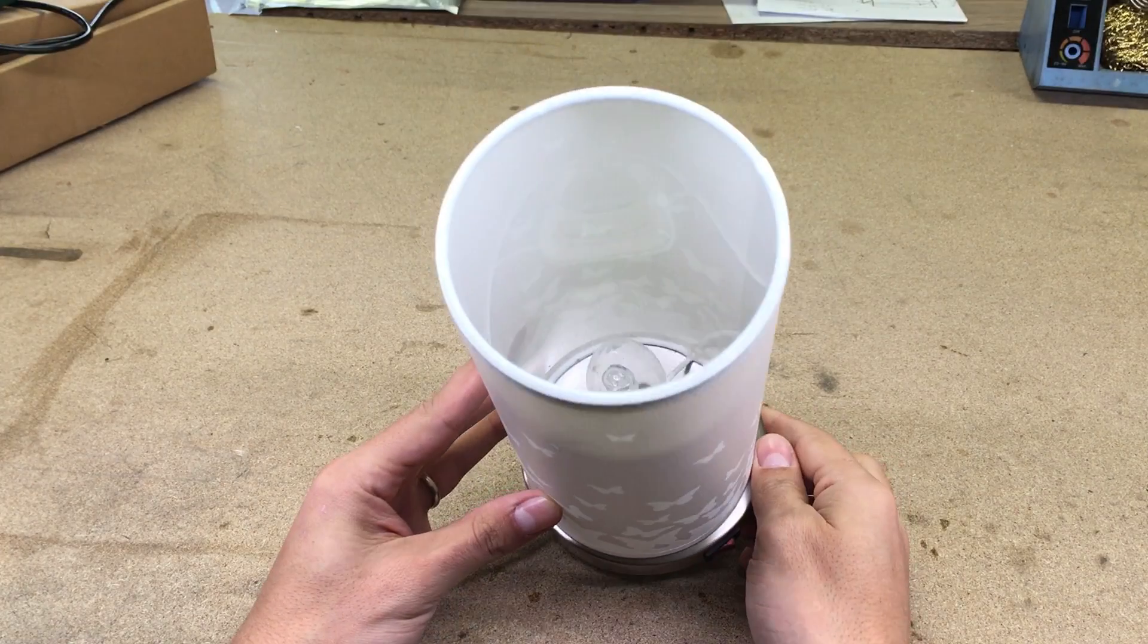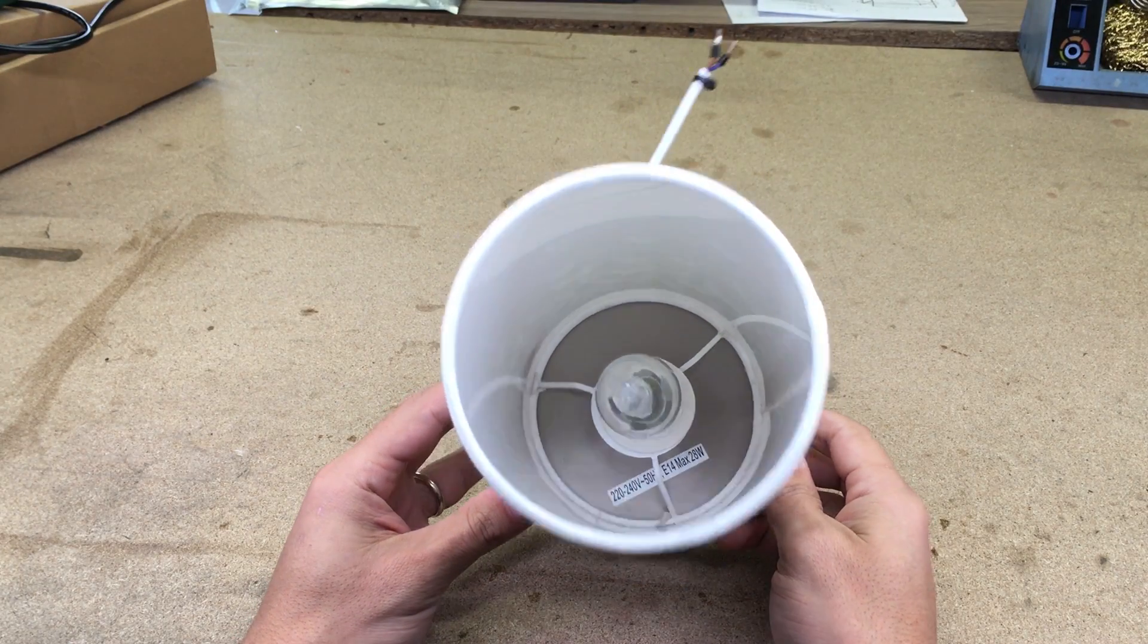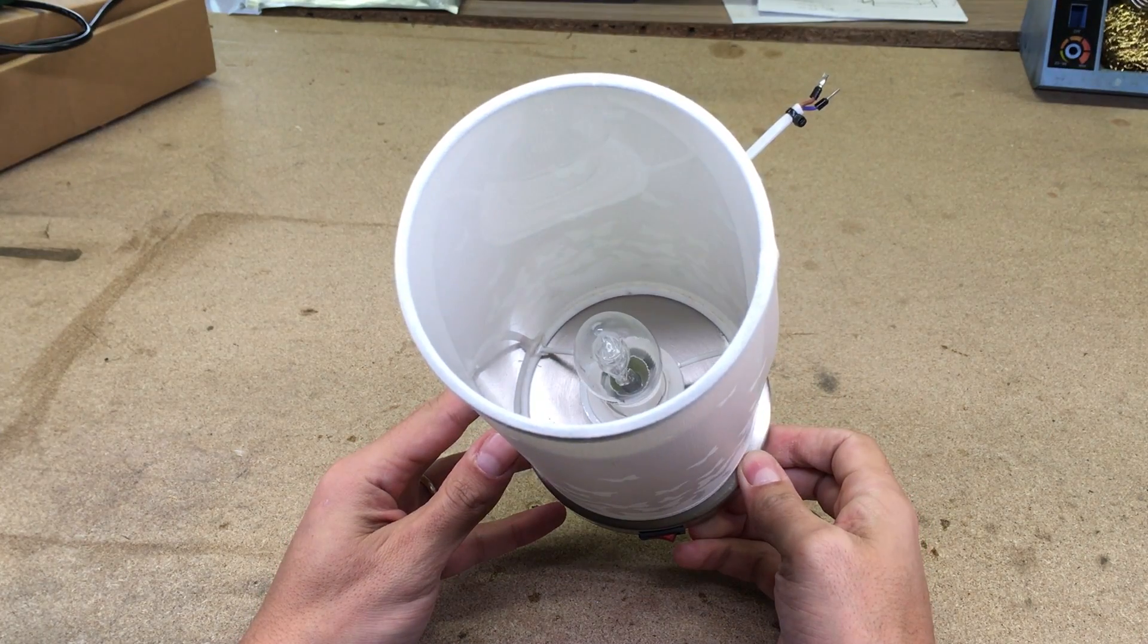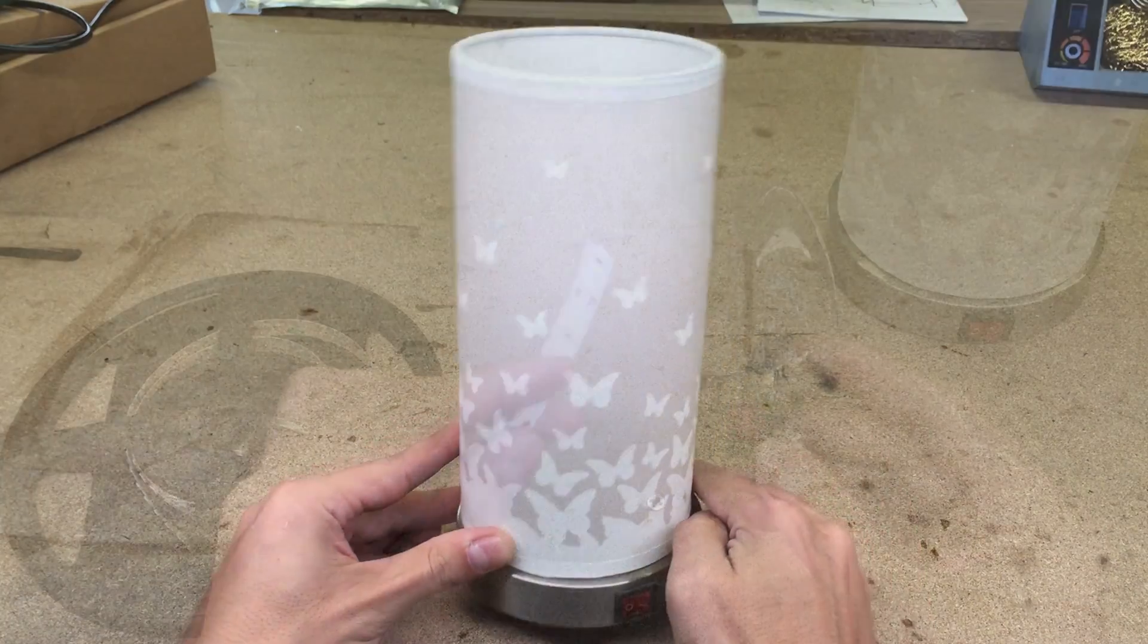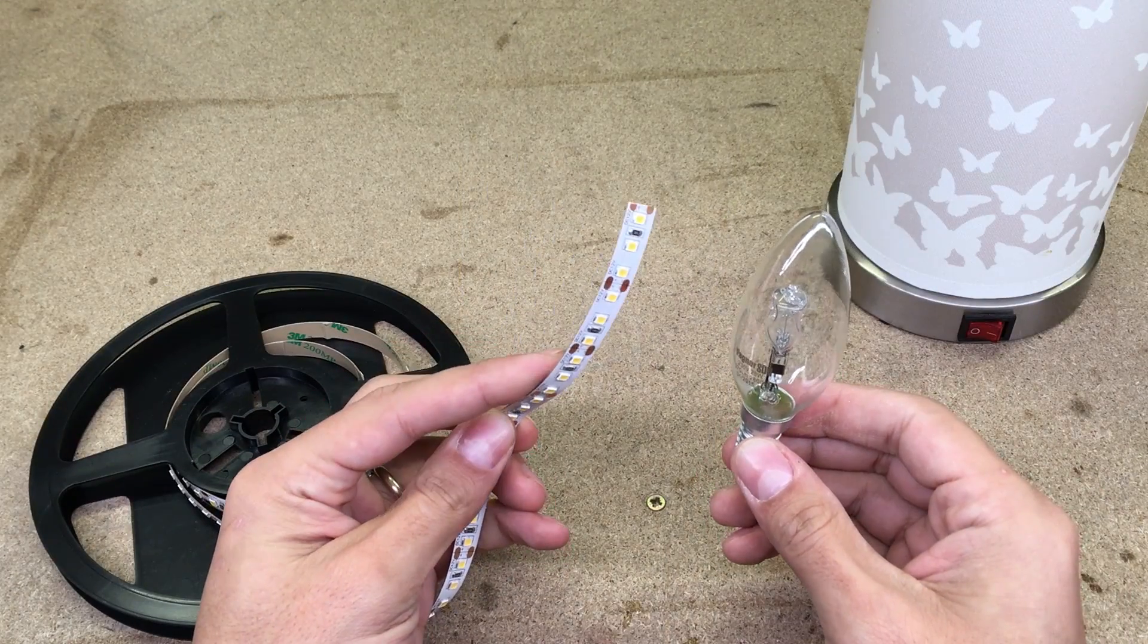Hello! In this video I'll show you how I did conversion of this nightstand lamp from regular incandescent light bulb to LEDs. Plus, made it dimmable.